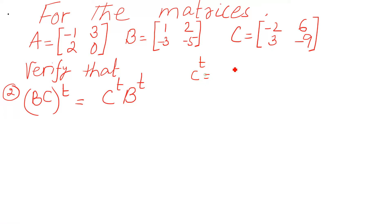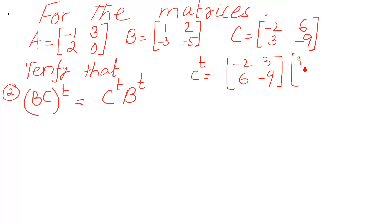Here I will give you a hint. C transpose: this is C, so the transpose of C — this row you have to make into a column. Then B transpose. First write down C, then B — do not change the position. Here you write B transpose, then C transpose. B is 1, 2 — make it 1, 2 as a column; make the second row into a column — this is B transpose. Then multiply. Whatever the answer will be on the right hand side, it should be equal to B C whole transpose. If you have any difficulty, without hesitation you can ask me.